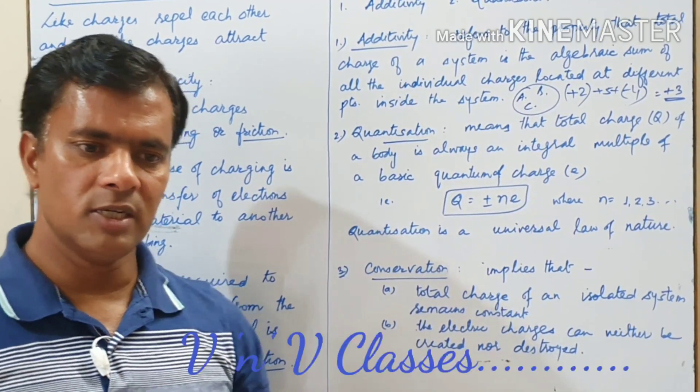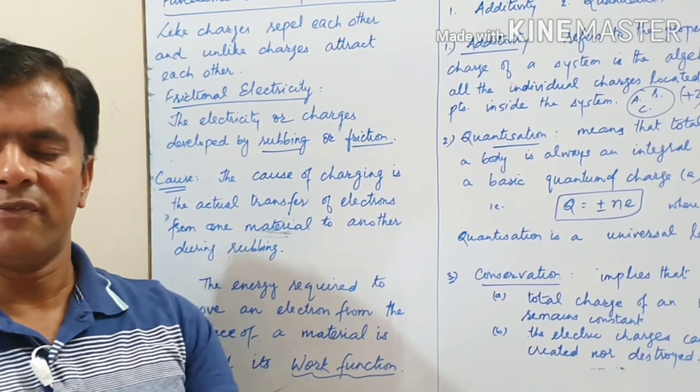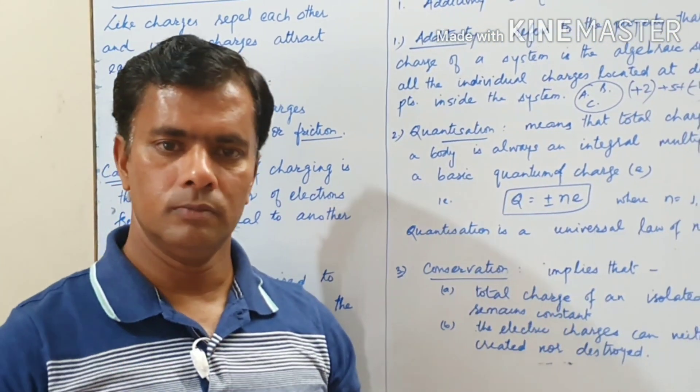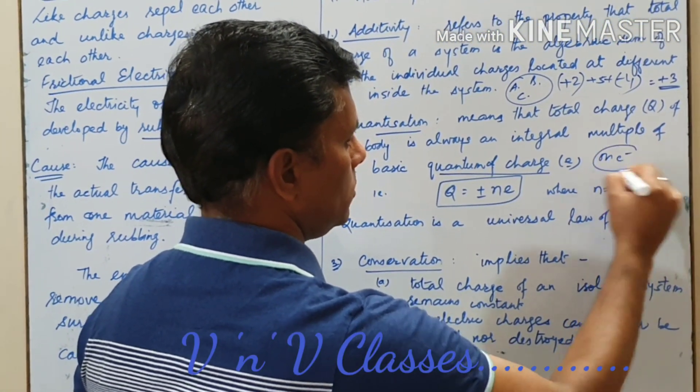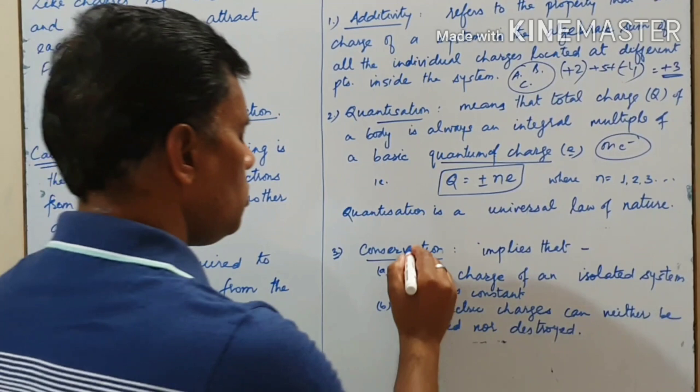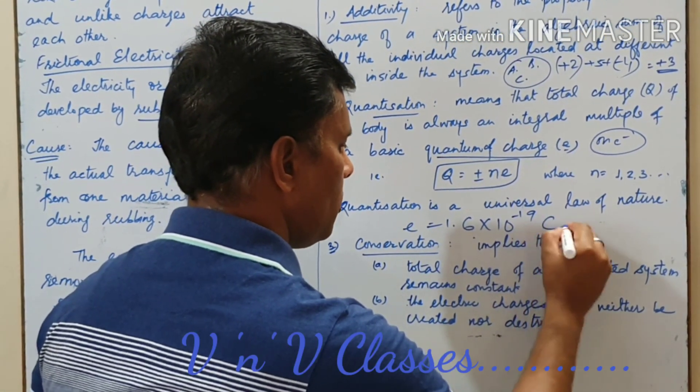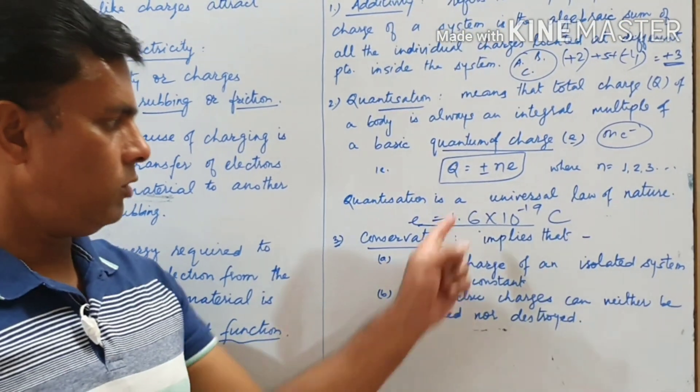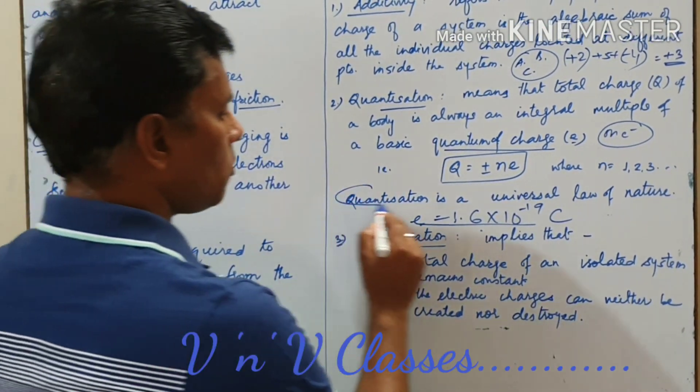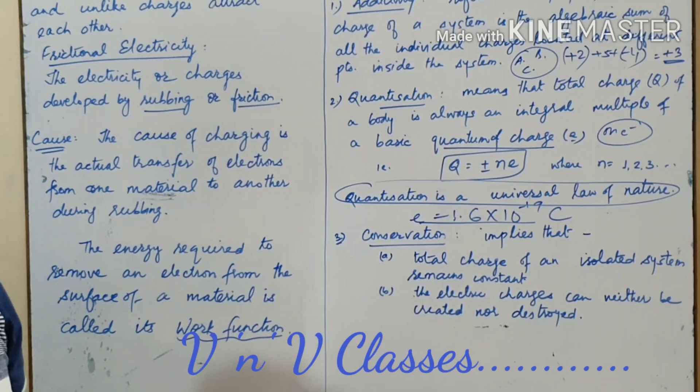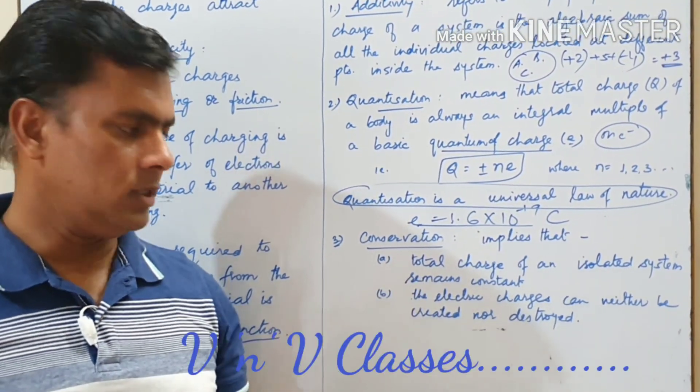Now what actually is the basic quantum of charge? The basic quantum of charge is the basic charge or the unit charge that refers to the charge on an electron. So the quantum of charge is the charge on electron. The value of this E is 1.6 into 10 to the power minus 19 coulomb. Remember that quantization is a universal law of nature.